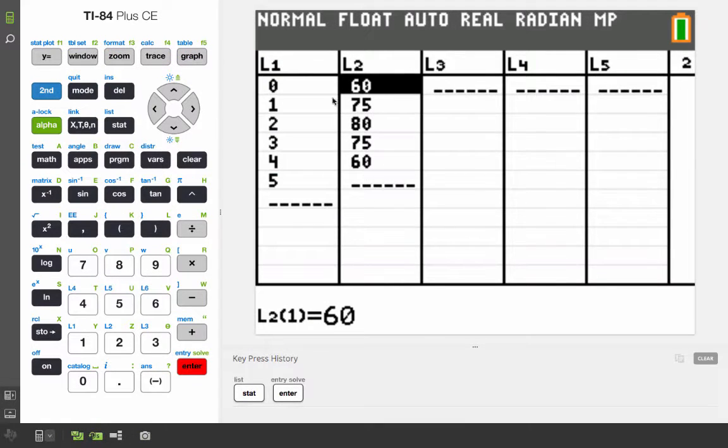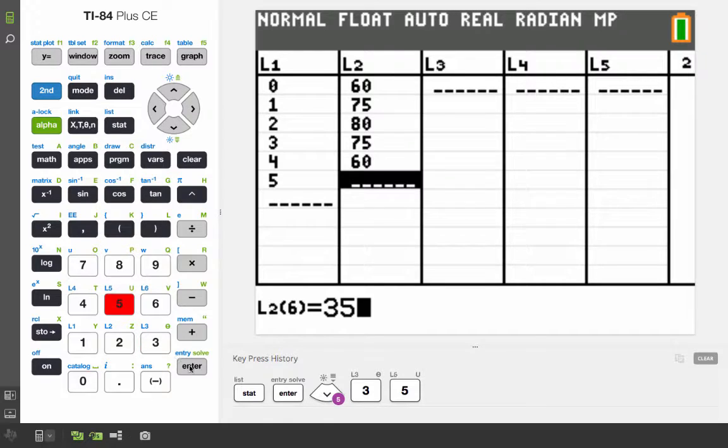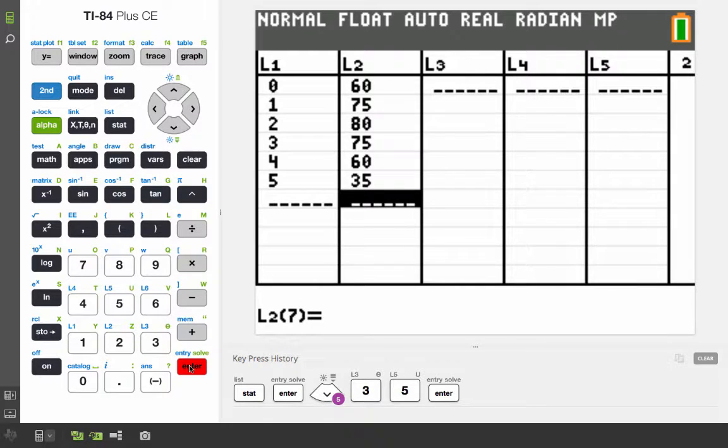See this highlighted portion right here? Arrow key down, keep going down. There you go. And you type in 35. So now I've entered all the values.